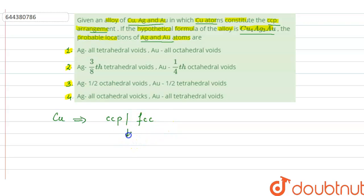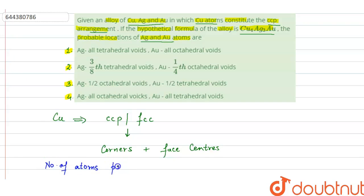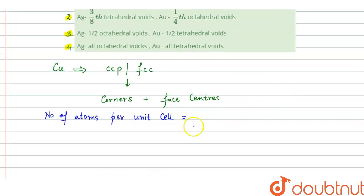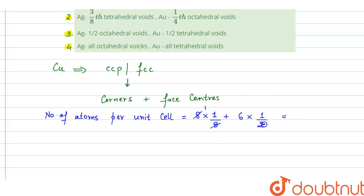In FCC, the atoms are arranged at corners and at the face centers. If we count the number of atoms per unit cell of FCC: atoms are present at corners — there are 8 corners and the contribution of each corner atom is 1/8 because each corner is shared by 8 unit cells. Plus we have 6 face centers in a cube, and a particle at the face center is shared by 2 unit cells, so its contribution is 1/2. This gives 1 + 3 = 4. So the number of atoms per unit cell is 4.